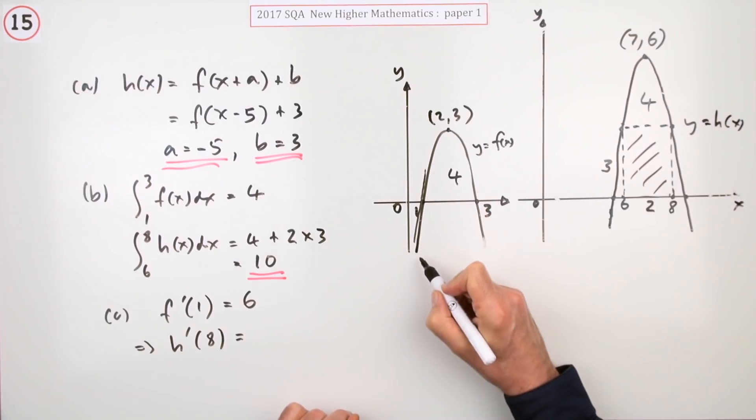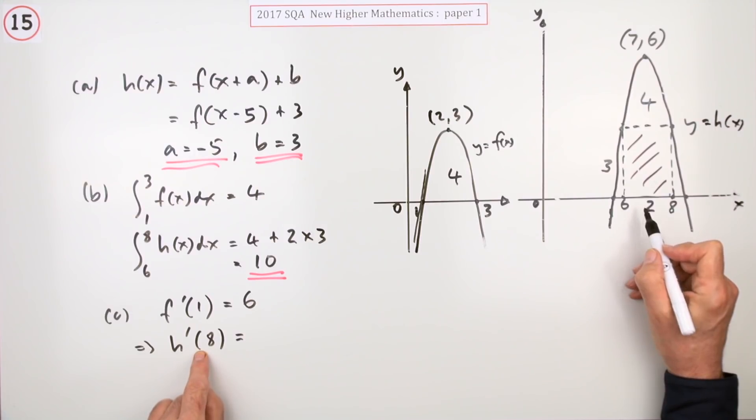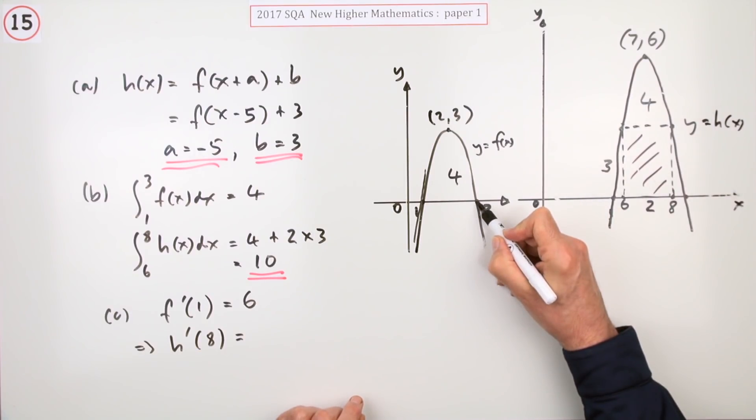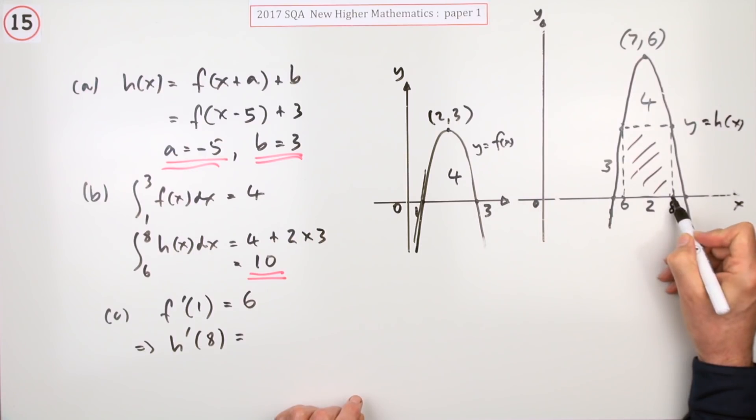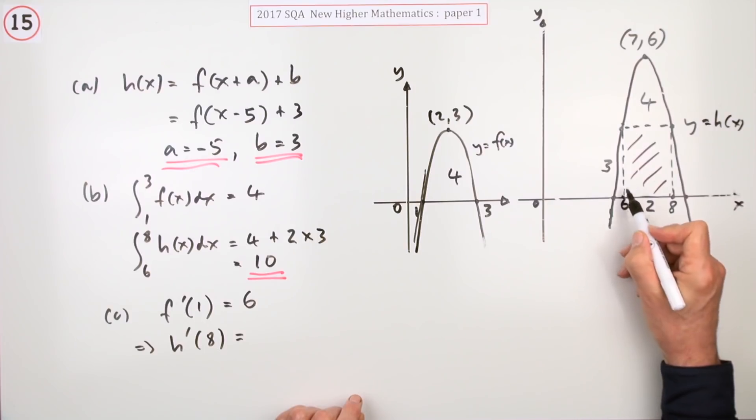Now on this graph at 8, eight actually corresponds to this point because at 8, that's where it was lifted up 3. That point corresponds to this one here.